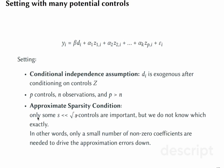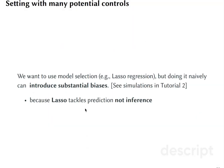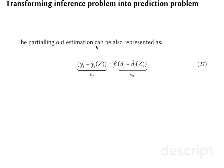Approximate sparsity condition means that the number of important variables should be much lower than the square root of number of predictors, but we do not know which exactly. Lasso is doing especially well when these conditions are met. We want to use model selection, but doing it naively can introduce substantial biases, as we saw in the tutorial. That's why we turned to partial out estimation.